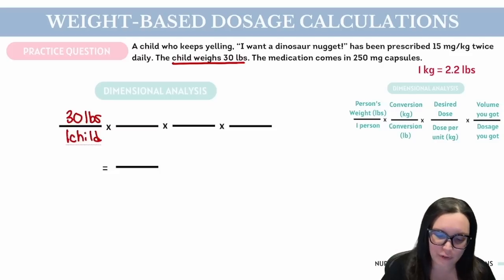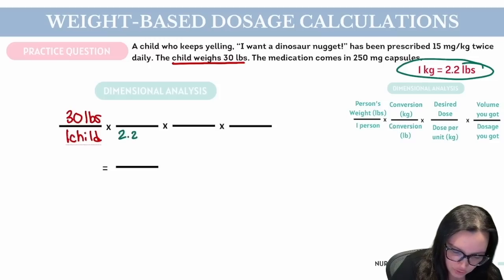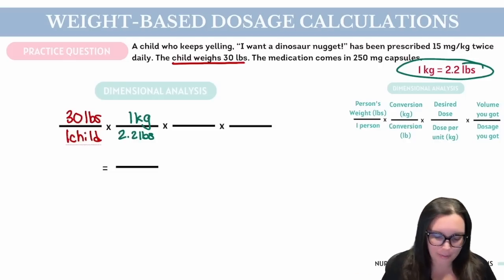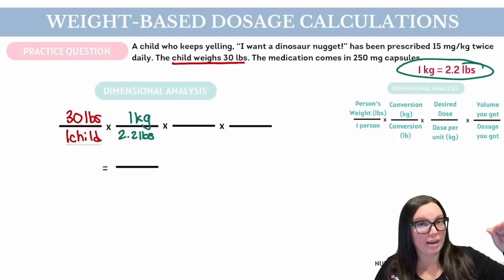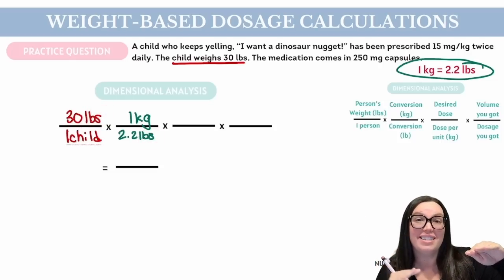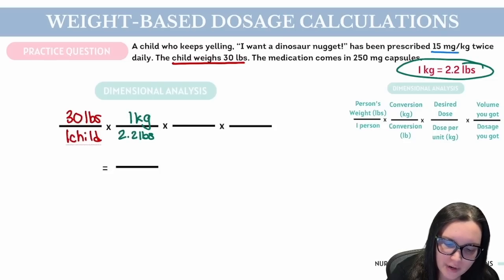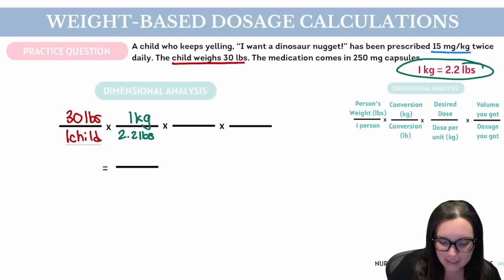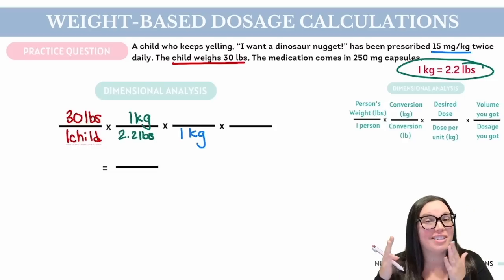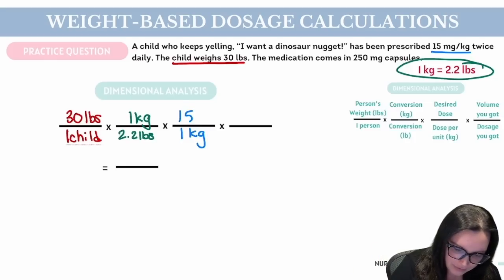Next up, we need to do our conversion. We know that one kilogram is equal to 2.2 pounds, so we're going to list 2.2 pounds at the bottom and one kilogram at the top. Make sure that you're lining everything up correctly because we need to start canceling things out — pounds needs to cancel out pounds. So whatever is in the numerator, the next fraction needs to have that unit in the denominator in order to cancel each other out. Next up, we want our desired dose: 15 milligrams per kilogram, with one kilogram on the bottom and 15 milligrams on top.